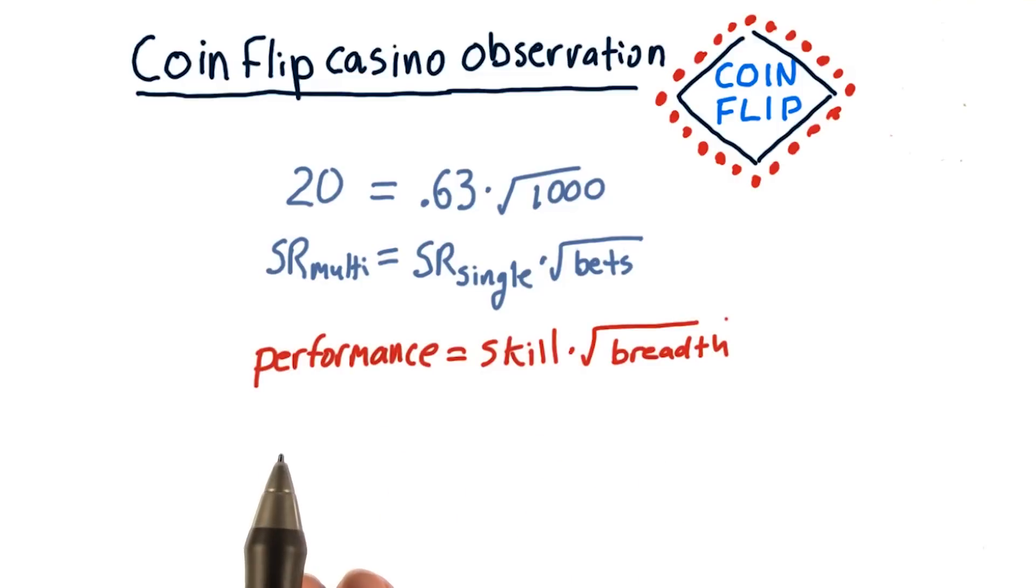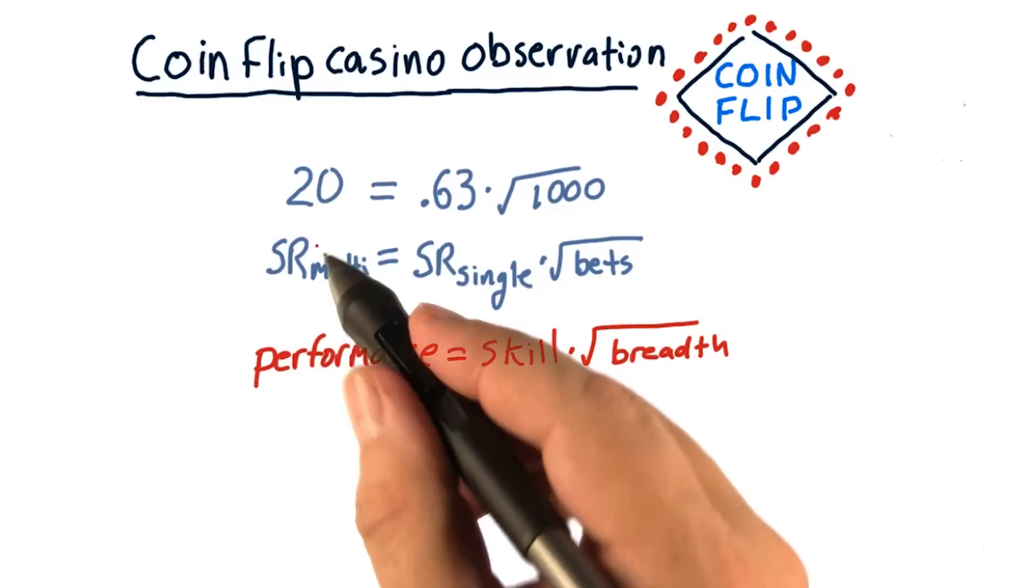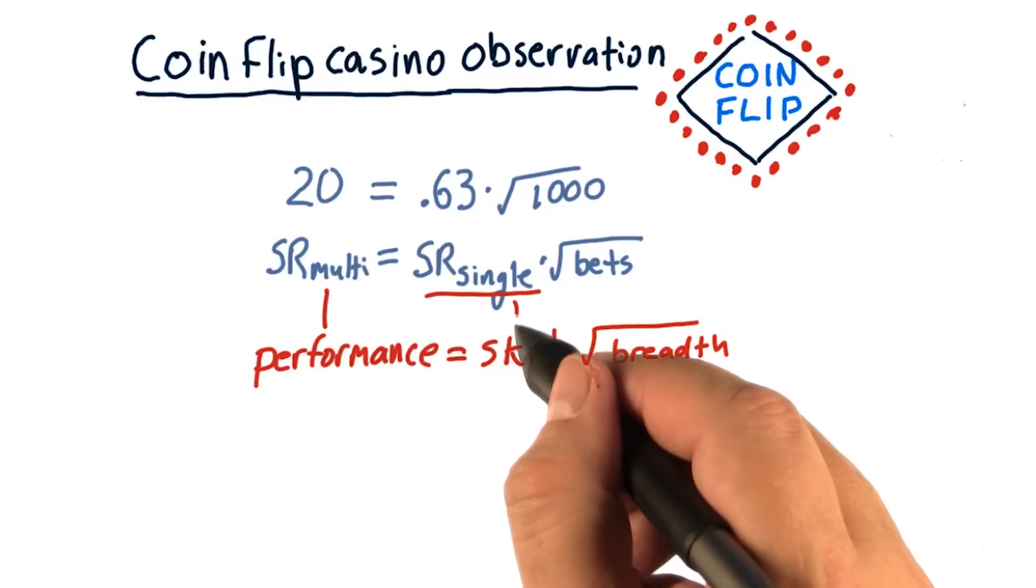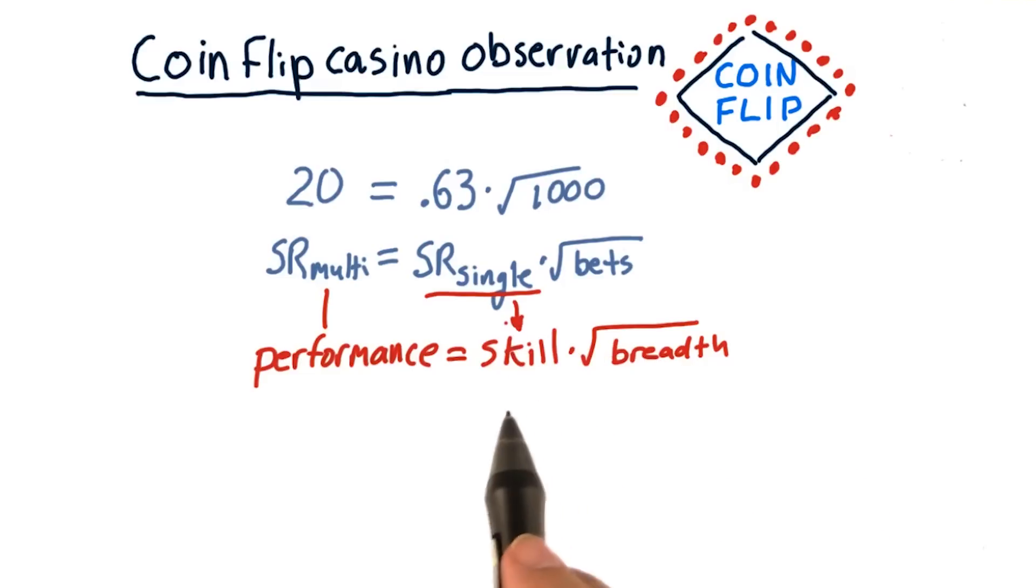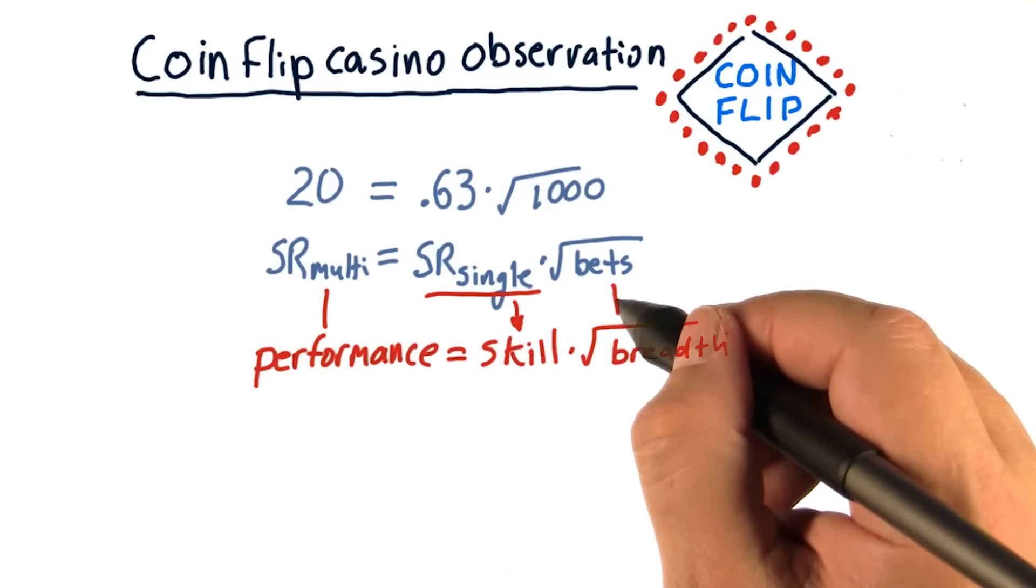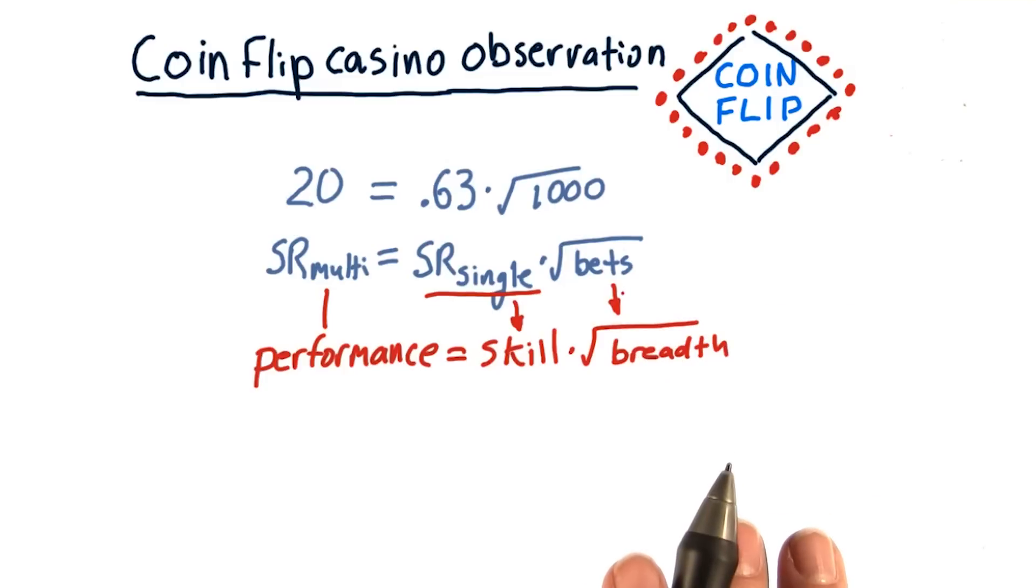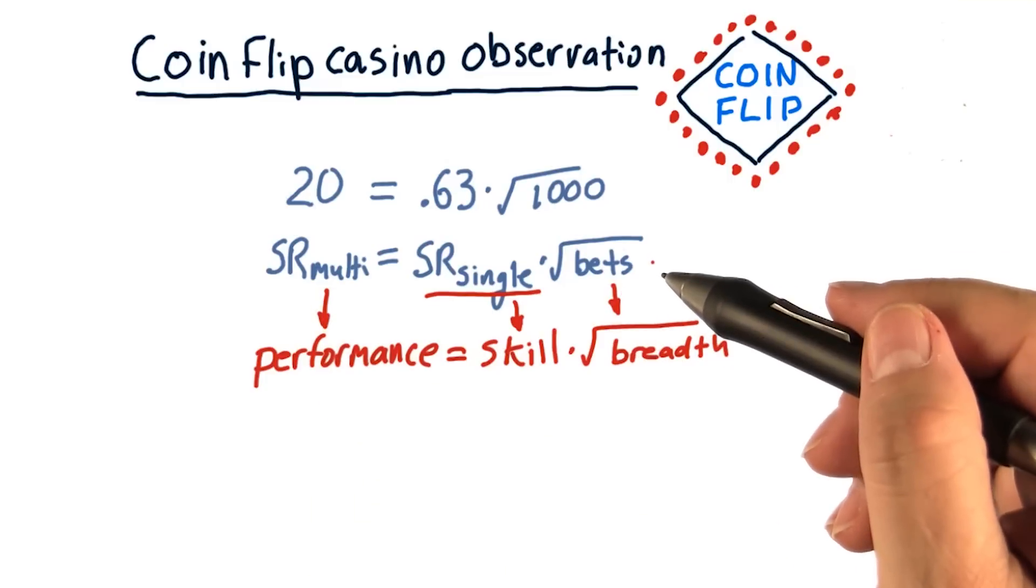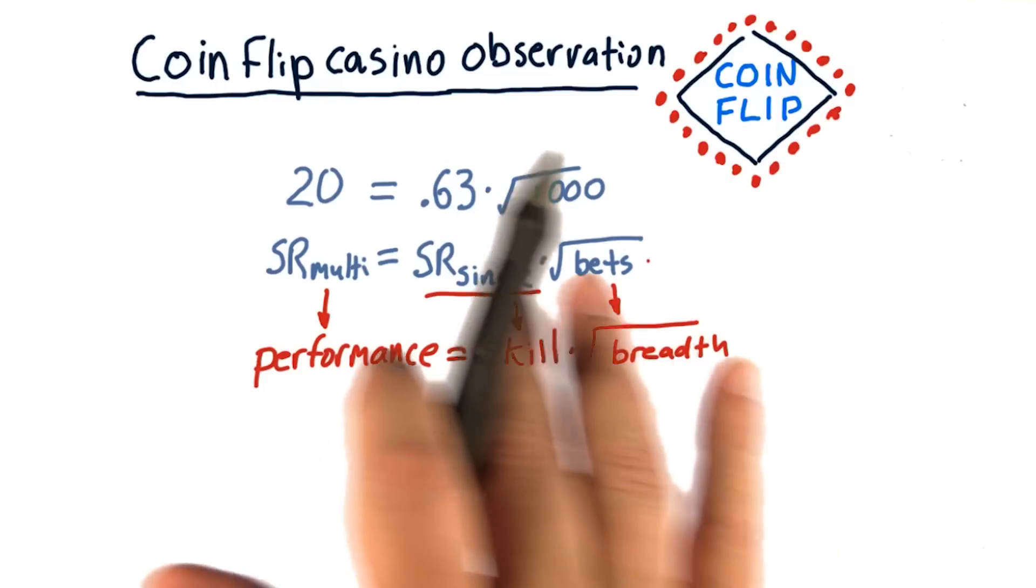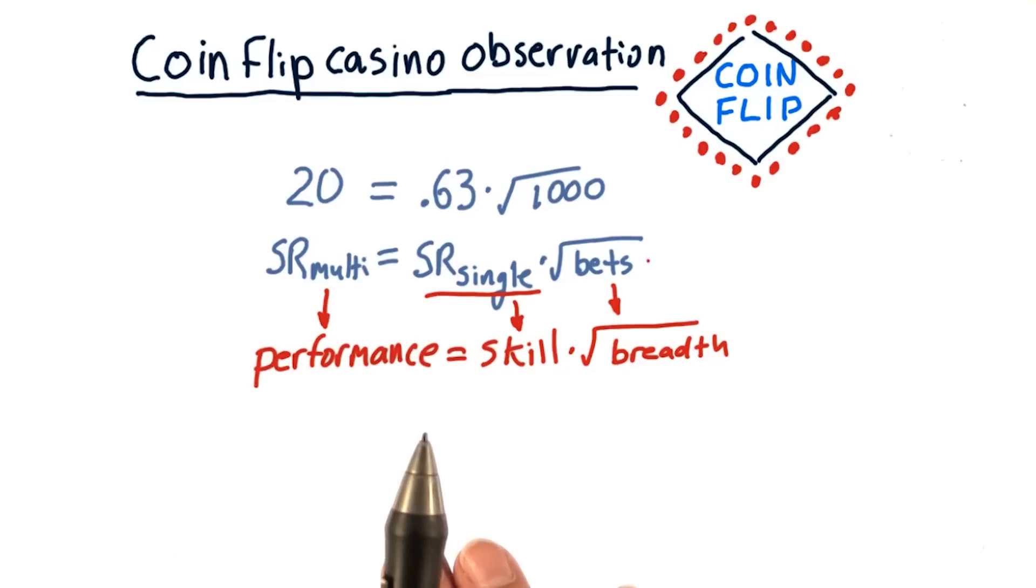And this relation is exactly like the fundamental law of active portfolio management. Namely, our overall performance is related to the skill in the case of making a single pick times the square root of the number of picks that we're able to make. So our coin flip casino has helped to show us how we can derive an equation like this for betting,